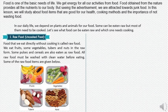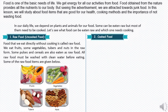Let's talk about raw food or uncooked food. Food which we eat directly without cooking is called raw food. Examples are fruits, some vegetables, some tubers and nuts — these can be eaten raw. Some pulses and cereals also can be eaten as raw food. All raw food, if we are going to eat it, has to be washed with clean water before eating.